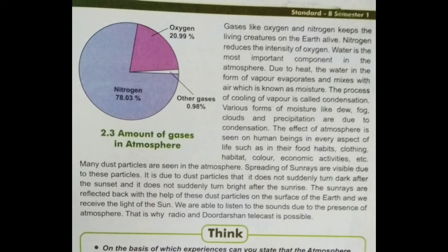Water is the most important component in the atmosphere. Due to heat, the water evaporates in the form of vapor and mixes with air, which is known as moisture. This means that due to temperature rise, water turns into vapor, goes up into the sky, and mixes with air — what we call moisture, or bhej.